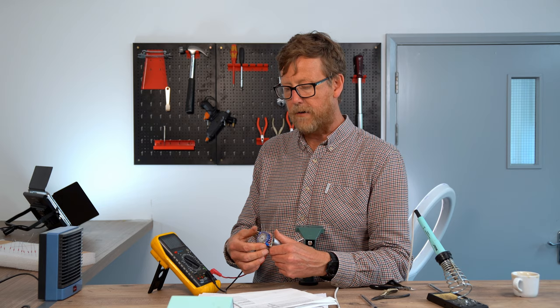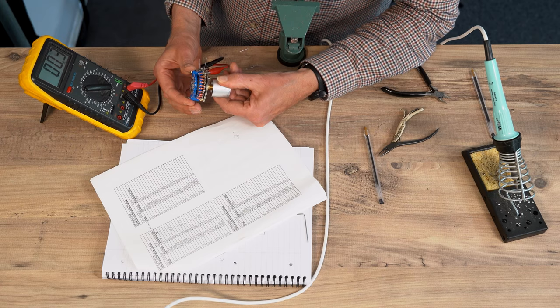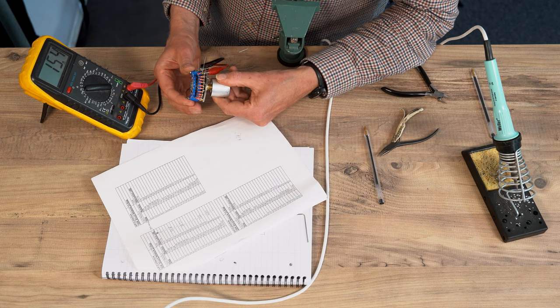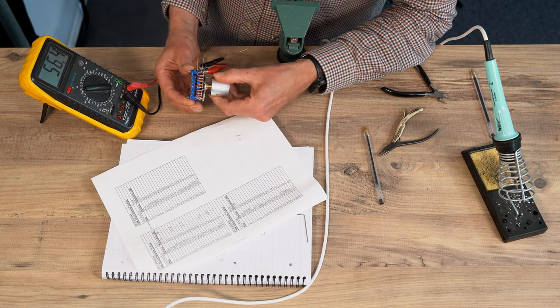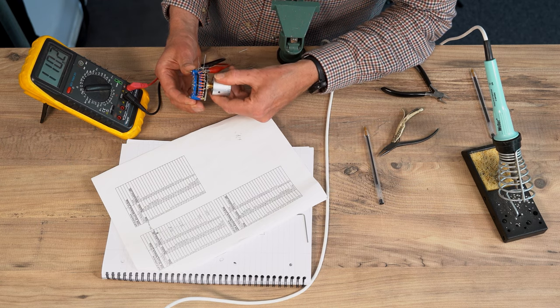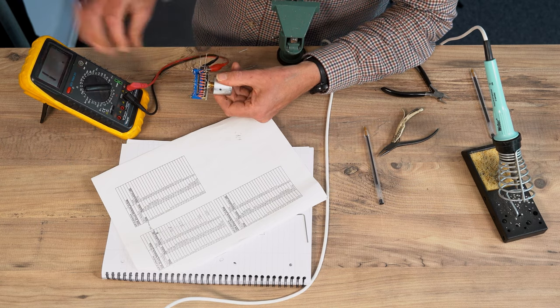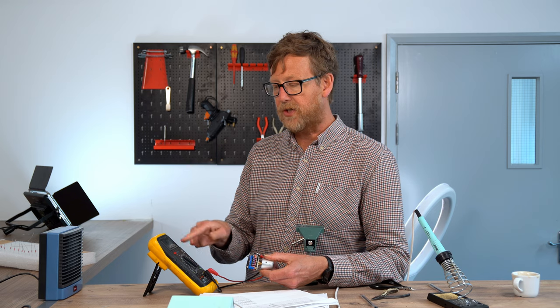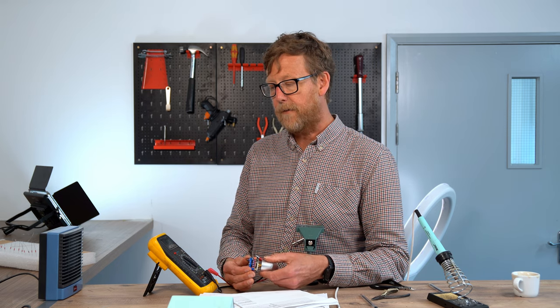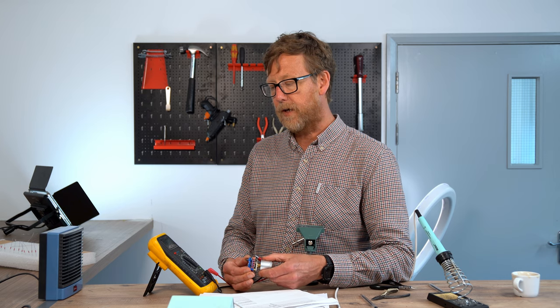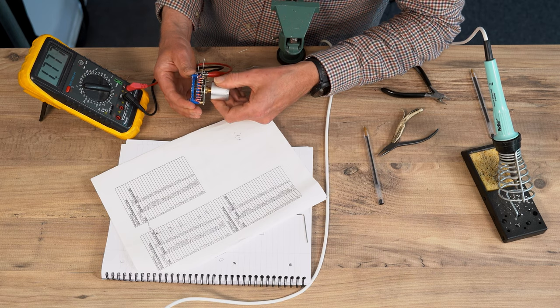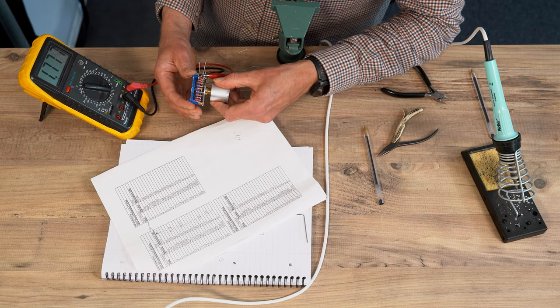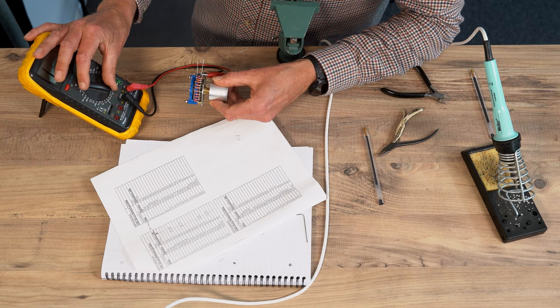So first step, going round, 15R, yep, 27R, 56R, 110R, you have to change the range, 200R, 360R, 9, 10, 1K3, 1K8, brilliant, change the range, 2K7, 3K9, 5K6.